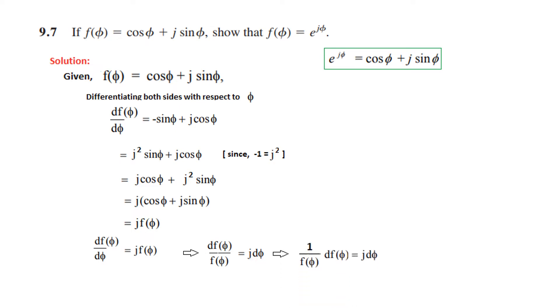This can also be written in this form: we bring dφ to the side, so this will be like 1 over f(φ) df(φ) equals j dφ.